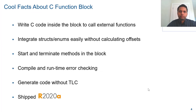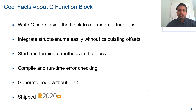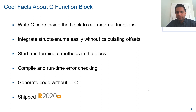To recap some cool facts about the C function block: you can write C code inside the block to call external functions, and you can write multiple lines of code or call multiple functions. You can integrate structures and enumerations directly in the C function block without calculating any offsets. The start and terminate methods are also present in the block. The block also has compile and runtime checking, and you can generate code without writing any TLC code. This block was shipped in 20A and you can try it out. Thank you.